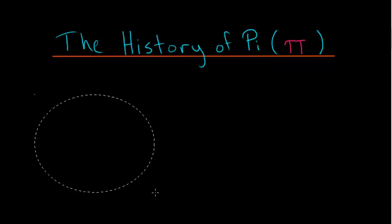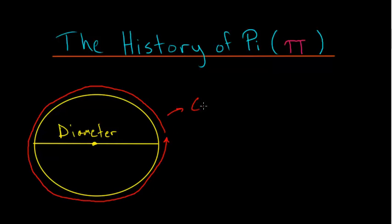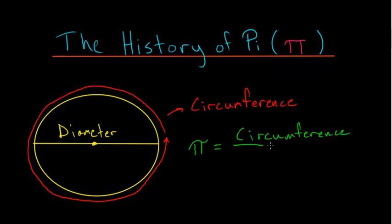So if we start with a circle and we look at the length across the circle through its center point, which is known as the diameter, and we compare this to the length around the circle, which we call the circumference, then pi is defined to be the ratio of the circumference of the circle divided by the diameter of the circle.